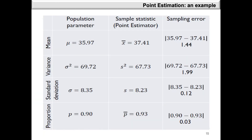Let's look at an example with population parameter values, sample statistic values, and sampling errors for the mean, variance, standard deviation, and proportion. For the mean, mu is 35.97, X bar is 37.41, and the sampling error — the absolute difference — is 1.44. For the variance, sigma squared is 69.72, S squared is 67.73, and the sampling error is 1.99. For the standard deviation, sigma is 8.35, S is 8.23, and the absolute difference gives a sampling error of 0.12.